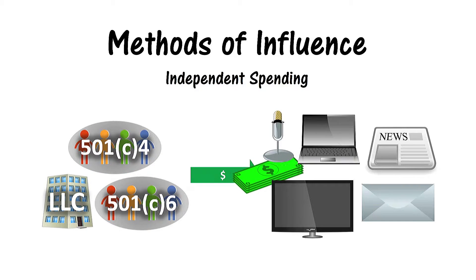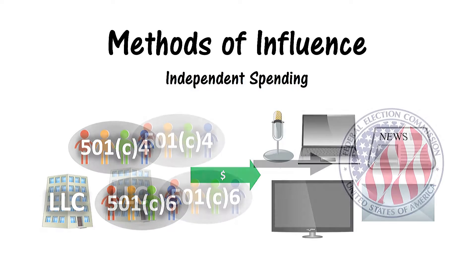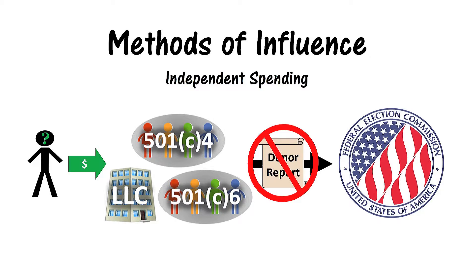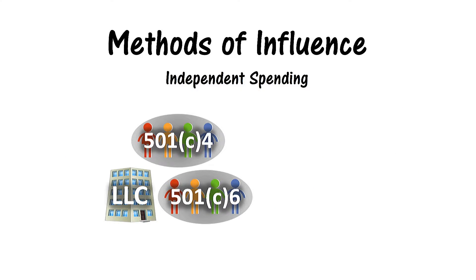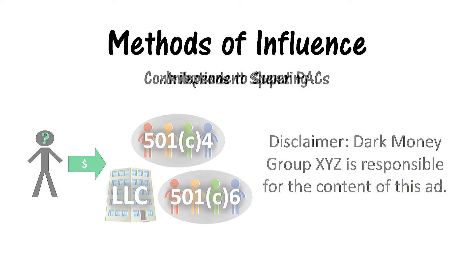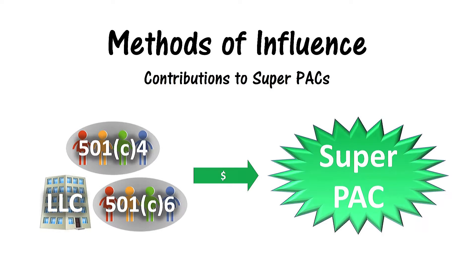These dark money groups spend money to influence elections in two main ways. First, they can spend money on their own to make ads, send mailings, or engage in other political activity. They must report these expenditures to the FEC, but they don't report the names of their donors. Although the FEC requires all political advertisements to include a disclaimer stating the individual or organization behind the ad, it is not always clear who is giving money to the dark money group making the ad.